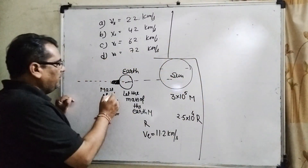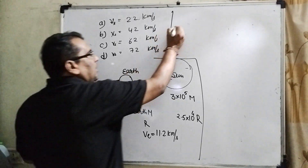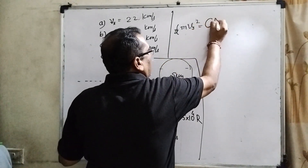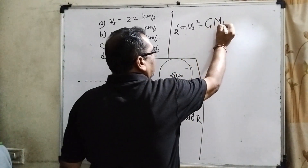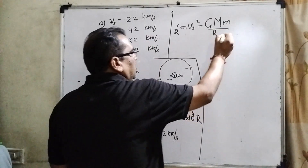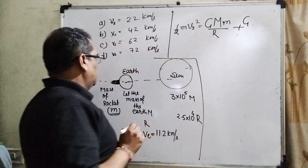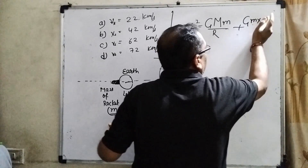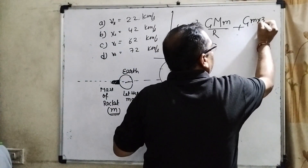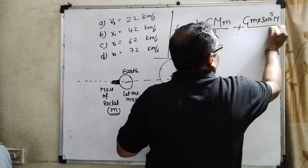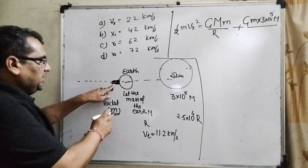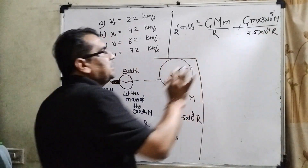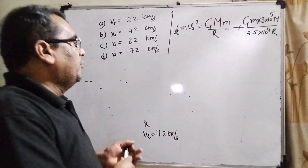So what is the mass of the rocket? We consider mass of rocket as small m. The equation is: ½ m Vs² = G·M·m / R + G · m · (3 × 10⁵ M) / (2.5 × 10⁴ R). Here M is the mass of the Earth and R is its radius. The second term represents the potential energy due to the Sun, using the given mass and distance ratios.